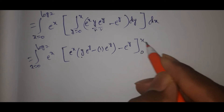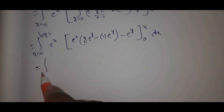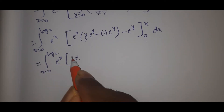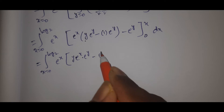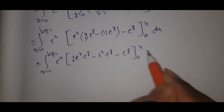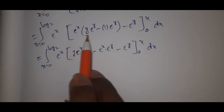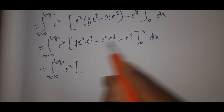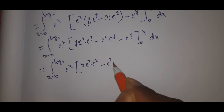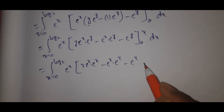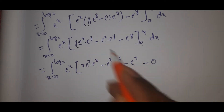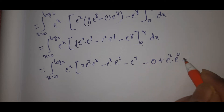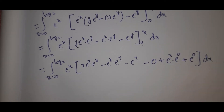Applied from 0 to x, into dx. That equals the integral x from 0 to log 2 of e to the power x. Applying the upper limit x: e to the power x into e to the power x, minus e to the power x into e to the power x, minus e to the power x. Then applying the lower limit 0: minus 0, minus of minus plus e to the power x into e to the power 0, minus of minus plus e to the power 0, into dx.